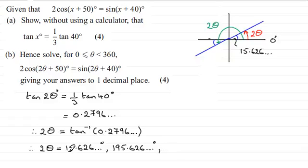So adding 360 to 15.626 is going to give me 375.626 and so on. And the same applies with this angle here. I've gone round the green angle there, 2 theta, but if I go round again another 360, I'll still be in range. So adding 360 to this gives me 555.626 and so on degrees.